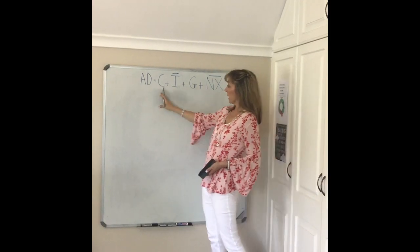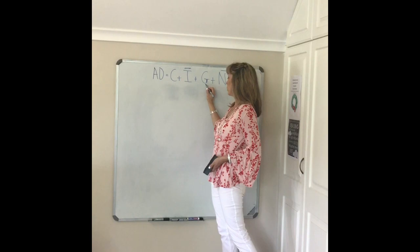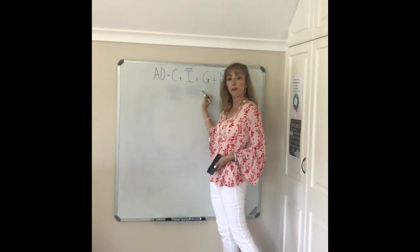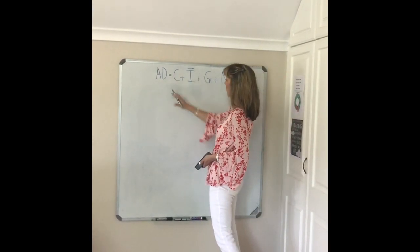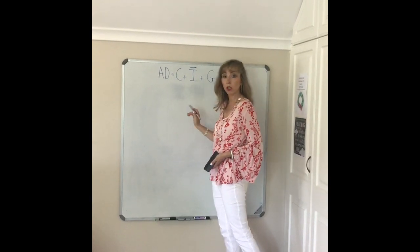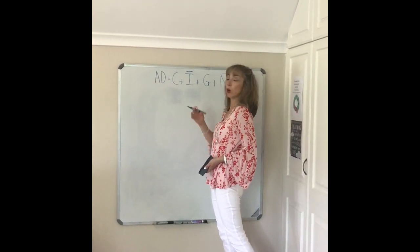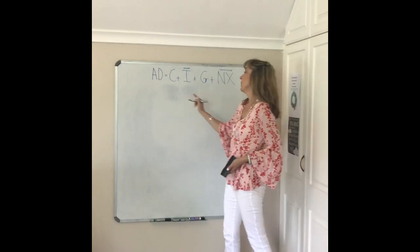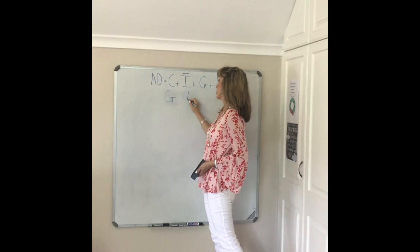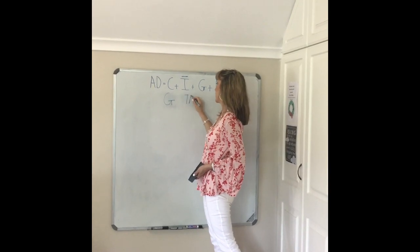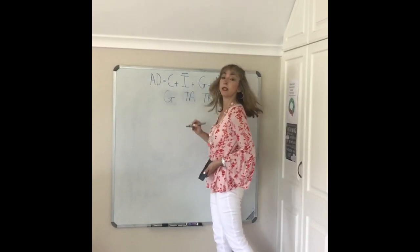Now we'll take a look at consumption, but before we do that we have to look at the effect government has. By introducing government, what effect does that have on consumption expenditure? Government can affect the economy in three ways: there's government expenditure, there's also the effect of taxes — we're going to call that TA — and transfer payments, TR.